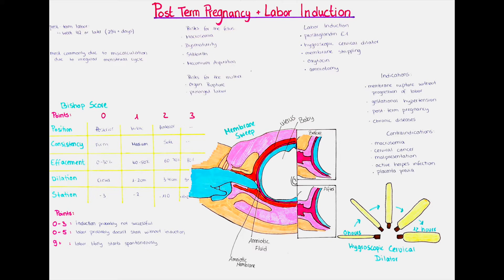Post-term pregnancy means that a pregnancy is longer than normal, and this has a few risks for the fetus and also the mother. One of the risks for the fetus is macrosomia, which refers to a birth weight of over 4 kg. In the time in the womb, the baby continuously receives nutrients and continues to develop and grow, so it will naturally be larger at, for example, 44 weeks compared to 37 weeks gestation. A larger baby is more difficult to give birth to, and so prolonged labor, birth trauma, and shoulder dystocia — which means a problem delivering the shoulder during birth — are more common in post-term deliveries.